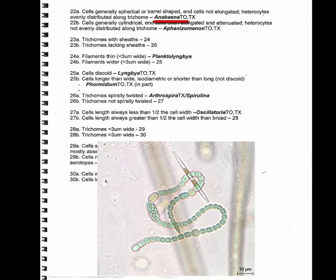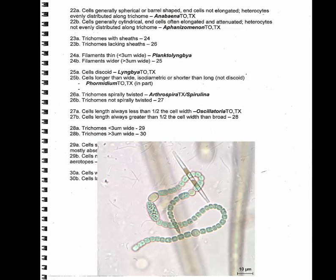If the end cells had been elongated, then of course we would probably have Aphanizomenon. Anyway, that's how you use this dichotomous key. It tells you Anabaena is both a taste and odor producer — TO — and a toxin producer — TX.